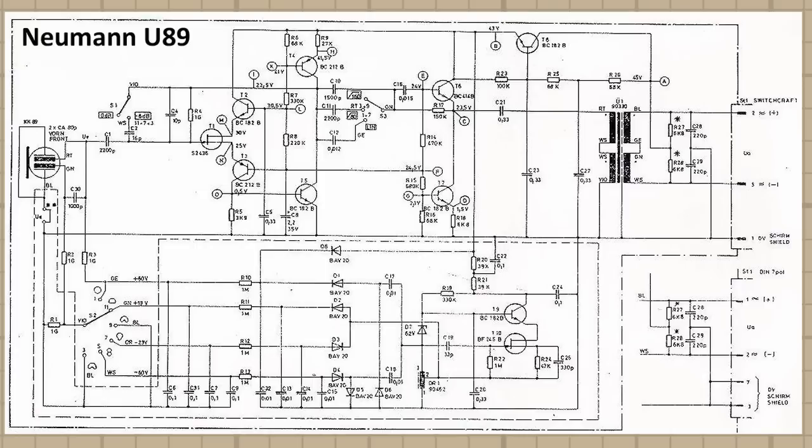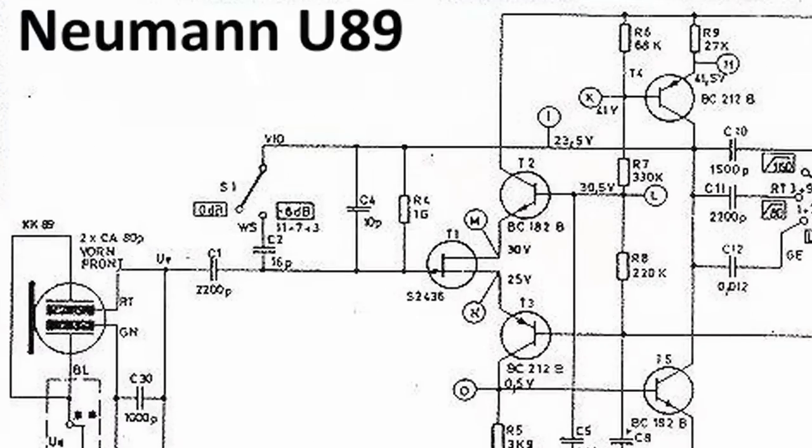So as we look at this diagram, a general rule of thumb is that signal flows from left to right. And this is true for schematic diagrams and block diagrams. Of course, there are exceptions to every rule, but in general, signal flows from left to right. So if we look all the way at the left of this diagram here, of the Neumann U89 schematic diagram, we will see this right here.